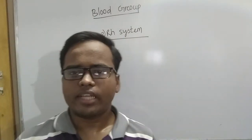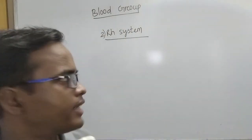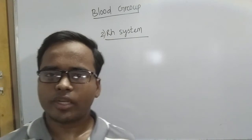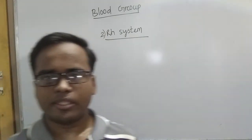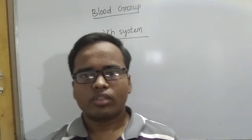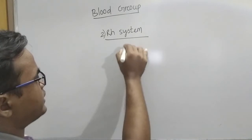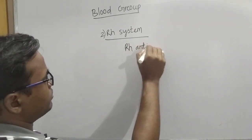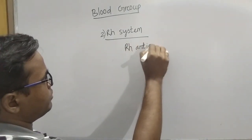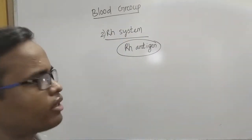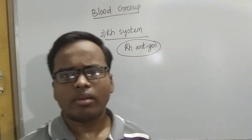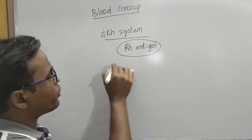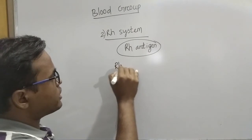The RH system — what is the RH system? It is also a protein present on the surface of RBCs, known as the RH antigen. The RH antigen was first found in a research monkey.